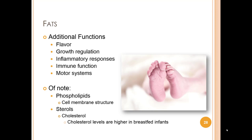Additional functions of fat include flavor and satiety, growth regulation, inflammatory responses, immune function, and a role in the development of motor systems. Numerous studies provide support that early exposure to human milk may be linked to lower blood cholesterol concentrations in adult life. Cholesterol plays an essential role in all membranes and is a vital component of brain tissue, aiding the development of the myelin sheath involved in nerve conduction. Breastfed babies typically have a higher cholesterol level than formula-fed infants.